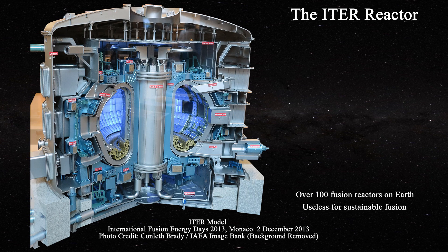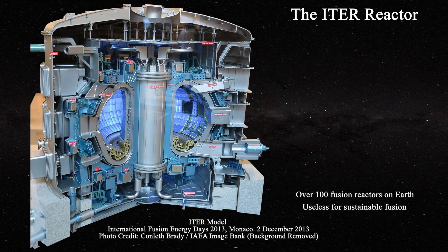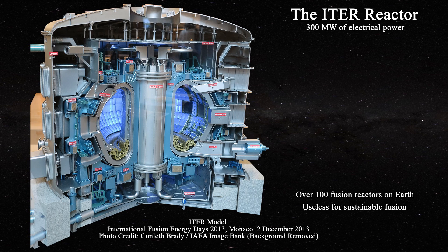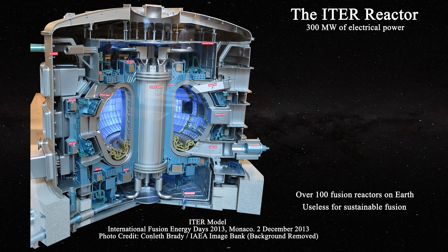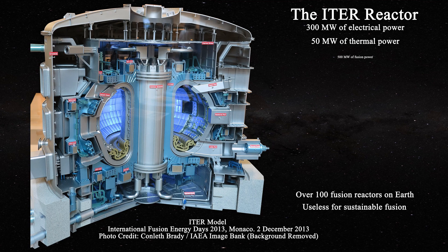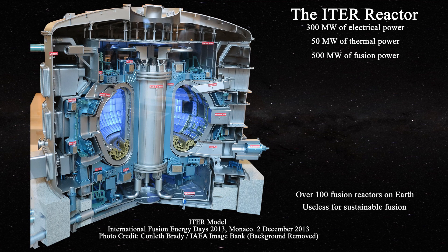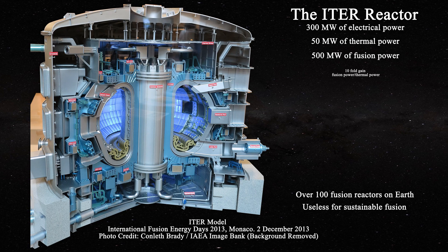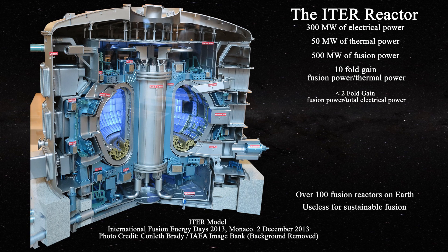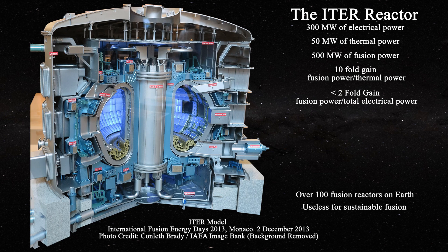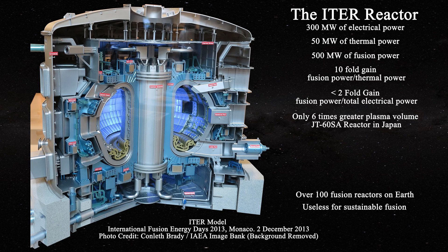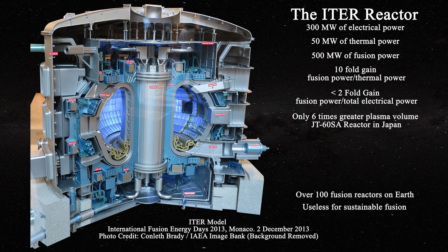The idea behind ITER is to confine a gaseous plasma using powerful magnetic fields and a total of 300 megawatts of electrical power. The resulting plasma will then be made to absorb 50 megawatts of thermal power. As a result, one expects to obtain a total of about 500 megawatts of power from fusion. The reactor has a plasma volume which is only six times greater than the current world leader, namely the JT-60SA reactor in Japan.